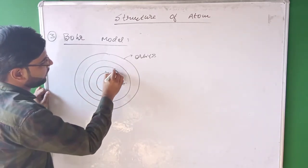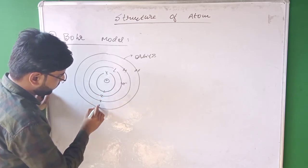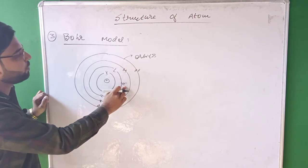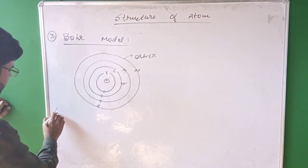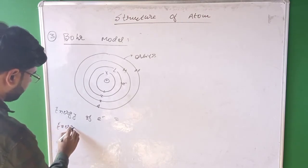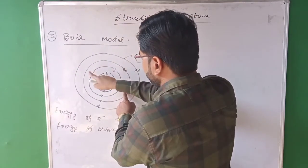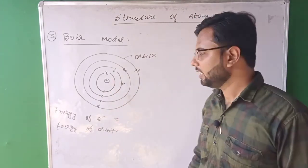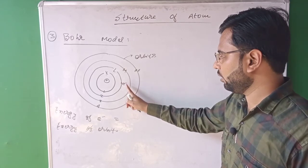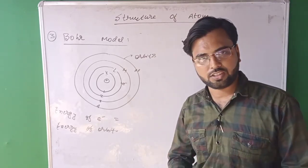The orbits are named K, L, M, N or 1, 2, 3, 4. If an electron is revolving in the L orbit, then the energy of this electron should be equal to the energy of the L orbit. This electron will continue to remain in this orbit and will not fall down to the nucleus. In case this electron emits or absorbs energy, it will jump to either a higher or lower orbit, but it will not fall down to the nucleus. So according to Bohr model, the atom is stable.